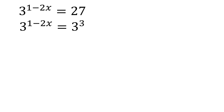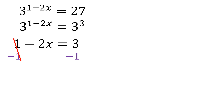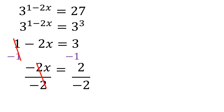Since they now have the same base, we can equate the exponents: 1 minus 2x equals 3. Then solve for x by separating terms with and without the variable. Subtracting 1 on both sides leaves negative 2x on the left, and 3 minus 1 which is 2 on the right. Then we divide both sides by negative 2 to isolate x. So x is equal to 2 divided by negative 2, which is negative 1.